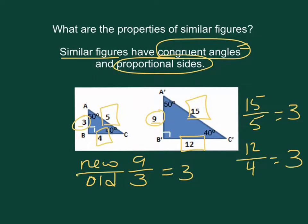So all of the sides are proportional, and we can already see that the angles are equal, so we know we do have similar figures.